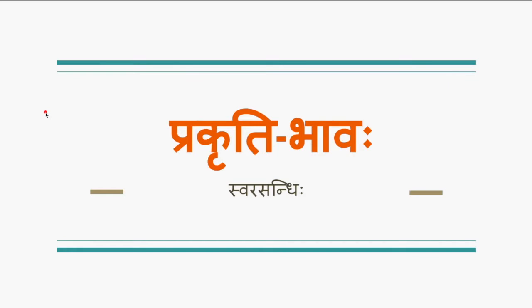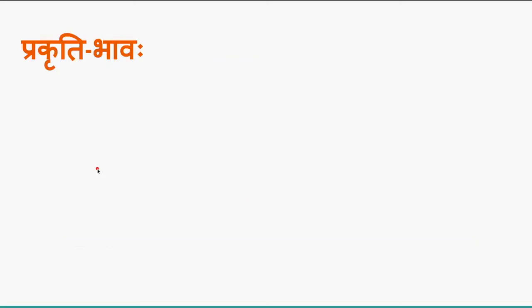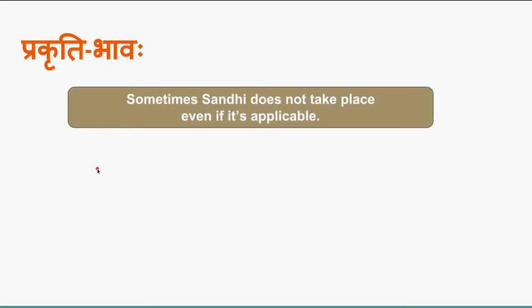Now there is another thing in the swara sandhi or sandhi category called prakriti bhava. In this session we will study what prakriti bhava is and how it is used in sandhis. We know that wherever two letters are adjacent to each other there is a possibility of sandhi, but in certain places, though all the sandhi rules are applicable, the sandhi still does not take place.